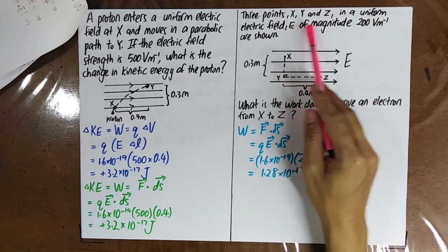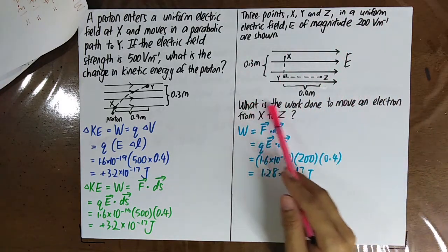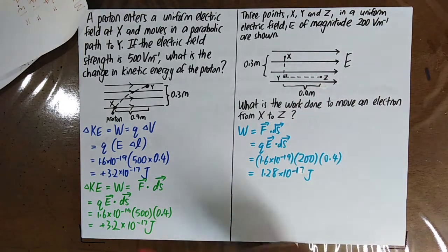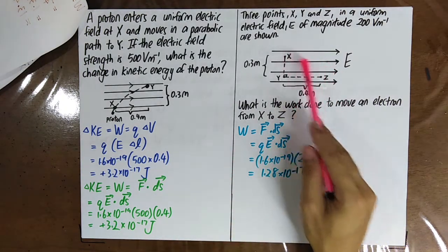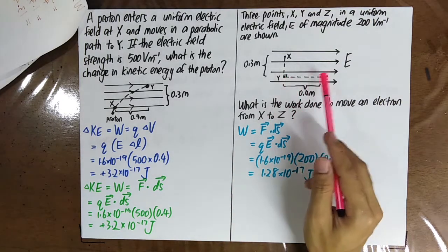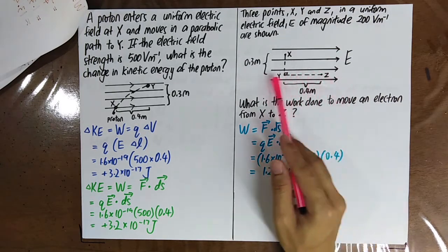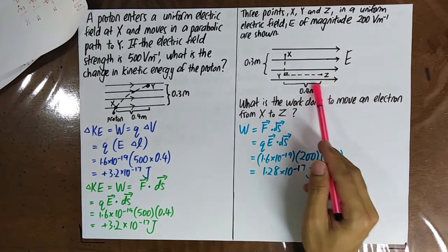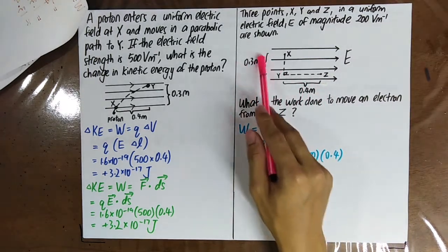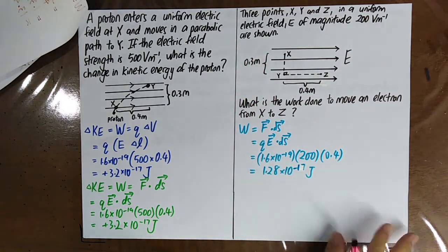Three point charges x, y, z in a uniform electric field E of magnitude 200 V/m are shown. What is the work done to move an electron from point x to point z? The only distance to consider is the displacement along the electric field line — 0.4 meters. The perpendicular displacement is irrelevant.